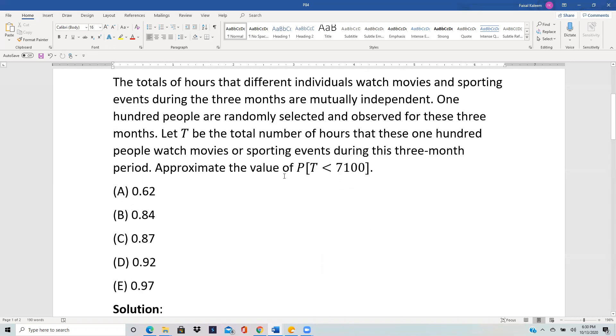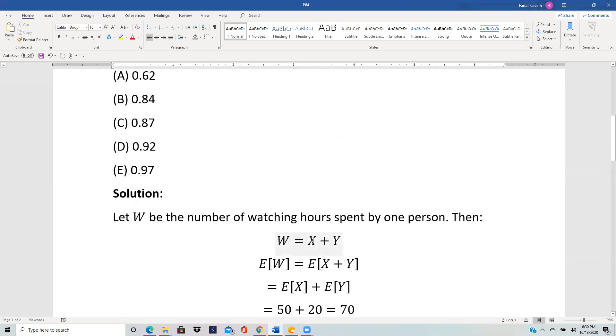So let's call W to be their sum. W equals X plus Y. So W will be the total number of watching hours per person during the period given.